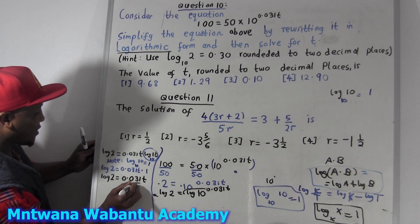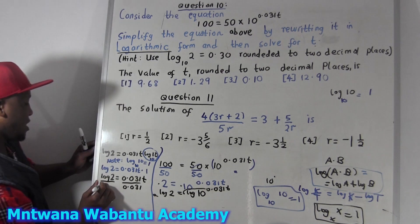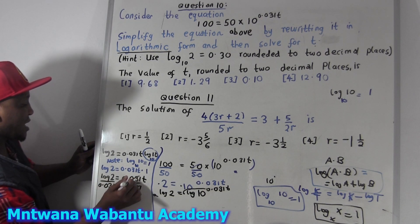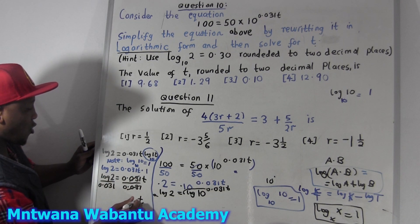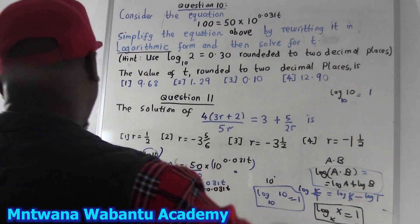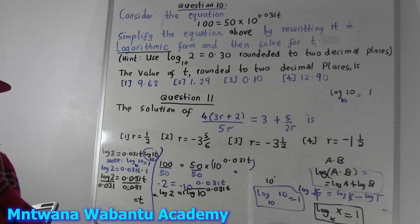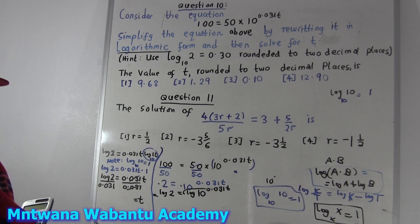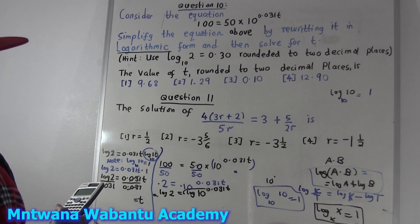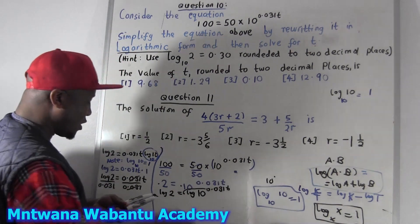Since I want to get the value of T, I'm going to divide both sides by 0.031. So T equals log 2 divided by 0.031, and this gives us 9.71.